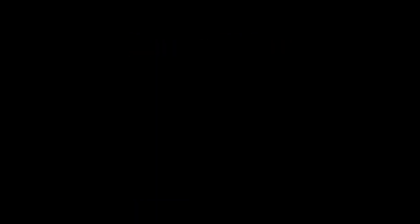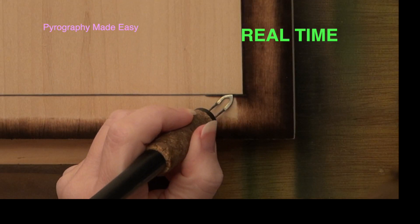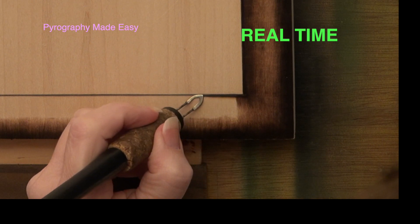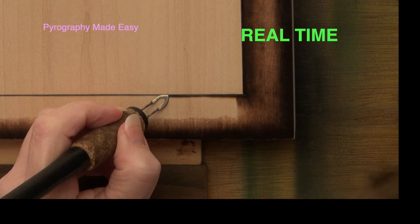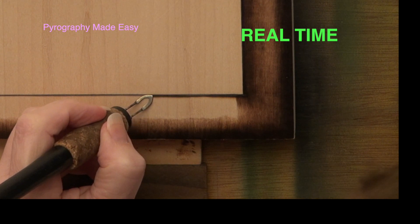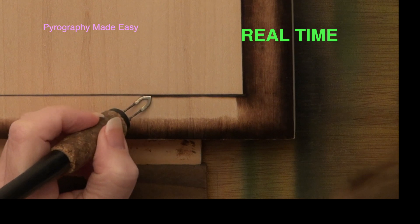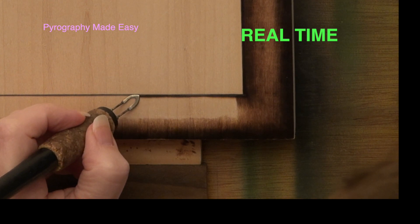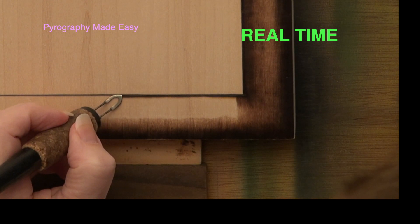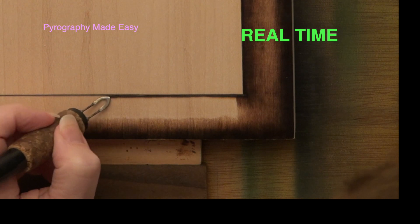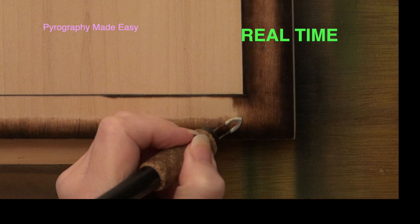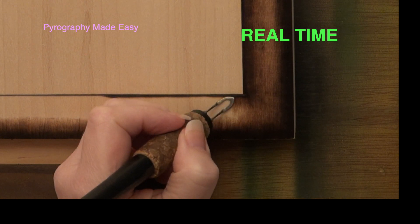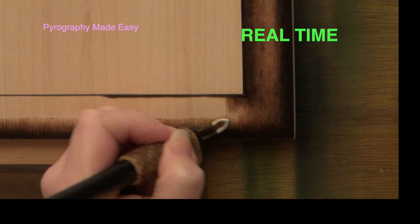With the inner edge begin by burning a dark wide band of color along the scored line. This creates a buffer zone. The buffer zone means you don't have to be precise when starting burn strokes. Instead you can start them anywhere in the buffer zone. That is the only difference between the inner and outer edge of the frame.